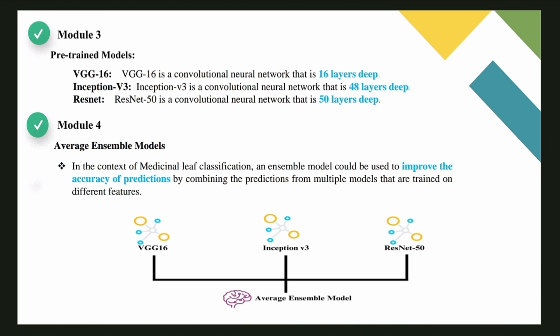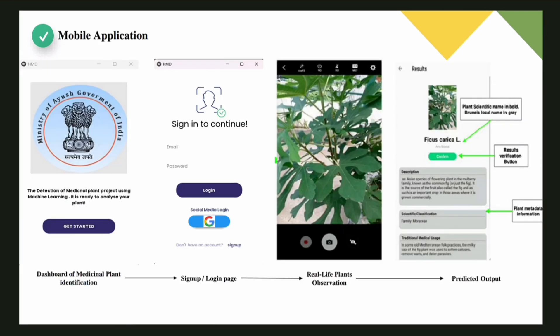Module 4 involves the average ensemble model. It is used to improve the accuracy of predictions by combining the predictions from multiple models trained on different features. Finally, the mobile application is created. To use this application, the user goes to the dashboard of medicinal plant identification and creates an account, or logs in using a Google account or email and password. The user can then take real-life images of a leaf or upload from the gallery, which gives a predicted output as the plant species name.